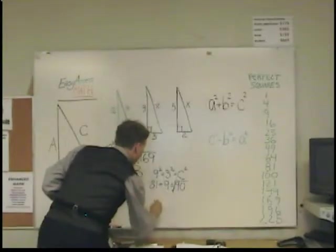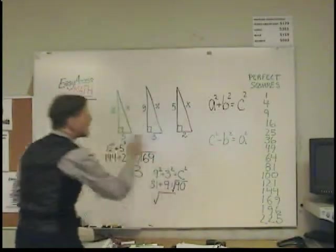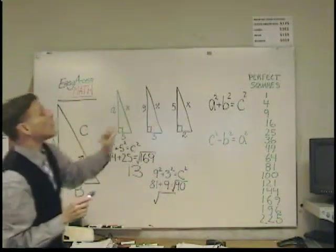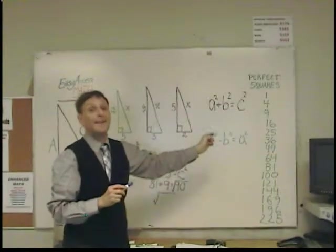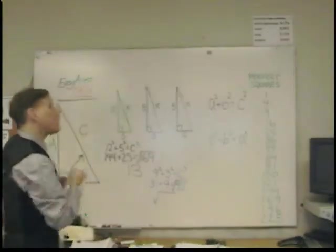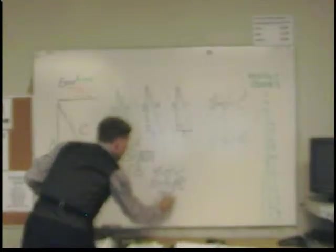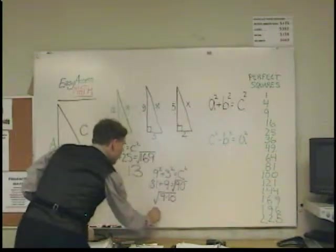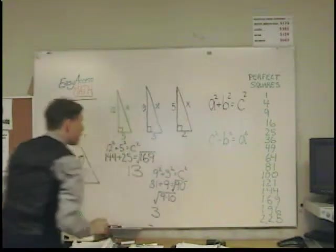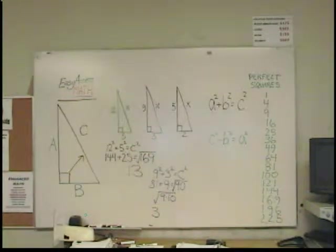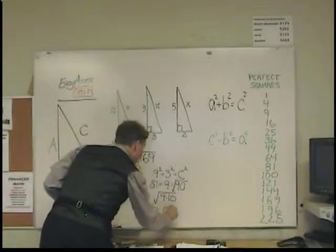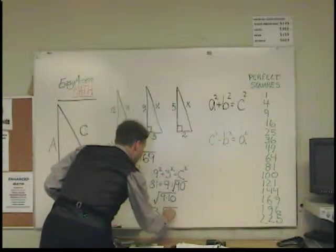So, to simplify the 90, I look at the list and I'll say, do any of those numbers go into 90? And I want the largest number that can go into 90. And that would be 9. 9 times 10, in this case. Now, to finish it off, the 9 comes out as its root outside, and that's 3. 9 comes out as its root. The 10 part stays in.